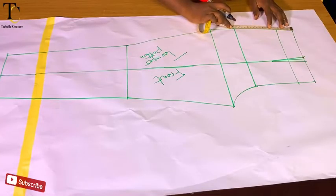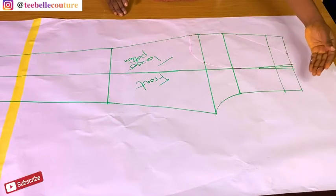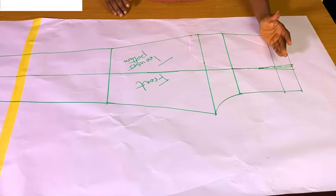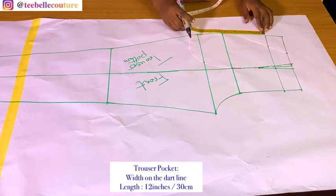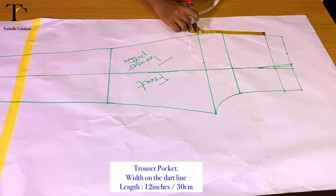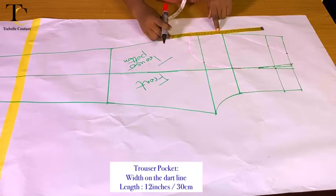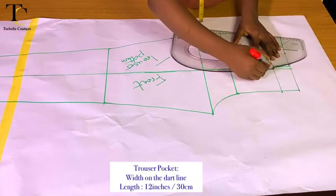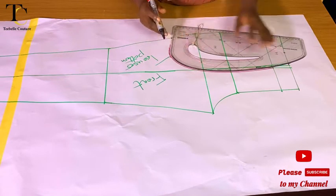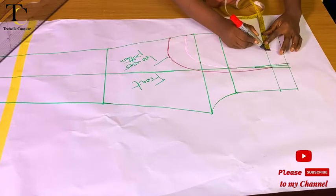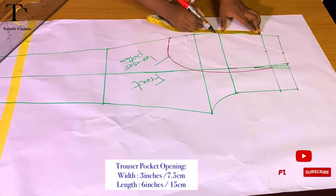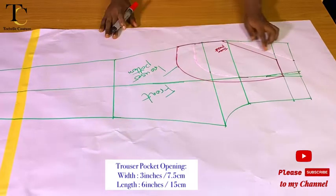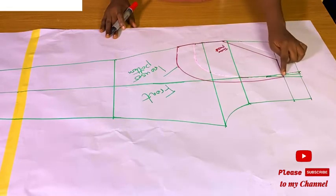The next thing I'm going to be doing is to indicate my trouser pocket. The reason why I'm erasing this particular pocket placement is because I started from my band instead of from my new trouser waistline, which is below my band. I'm going to go in to measure my pocket width exactly along my dart line, then come down from the pocket length by 12 inches, which is about 34 centimeters. I'll use my pattern master to connect any curved lines from the pocket width to the pocket length. The pocket opening is three inches — 7.5 centimeters — and the length of the opening is six inches, which is about 15 centimeters.